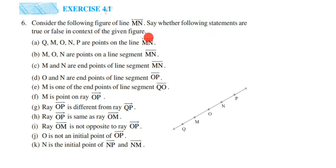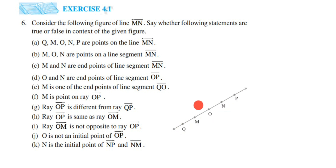The first statement is: Q, M, O, N, P are points on line MN. They have given line MN. Q is there, M is here, O is here, N is here, P is here. You can see all the points are lying on this line. So the answer for this statement will be true.